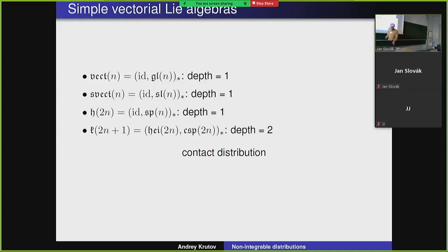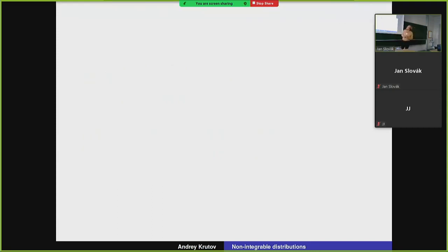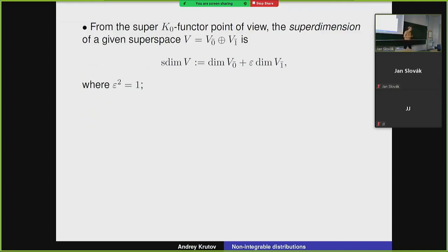Over the complex numbers, when we just consider Lie algebras as a series, this bunch of facts is not very interesting because we don't have many non-integrable distributions. But things become much more interesting when we go to the super case. I will briefly recall some results about algebraic varieties or fields of positive characteristics, but first I want to give a short crash course on what Lie superalgebras are. So: what is a super vector space? It's a Z_2-graded vector space with an even and odd part.